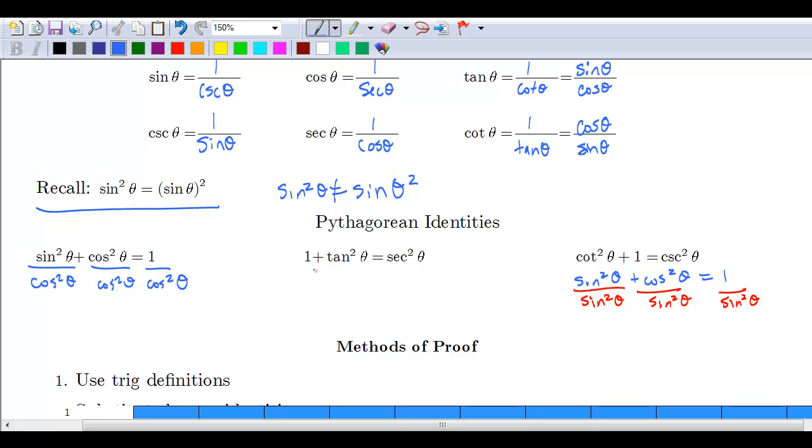The other thing to keep in mind: if you don't want to memorize all of these, just make sure you have this first one down—sine squared plus cosine squared equals one—because you can always divide by cosine squared or sine squared to get these other two formulas.